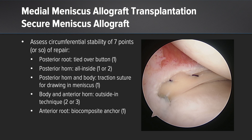I assess circumferential stability at approximately seven points of the repair. The posterior root is always one point of repair, tied over the button. The posterior horn uses the all-inside suture technique — usually one or two fixation points. The posterior horn and body has that traction suture for drawing in the meniscus, tied over the capsule. The body and anterior horn use the outside-in technique — two or three fixation points. The anterior root is always one fixation point with that biocomposite anchor.